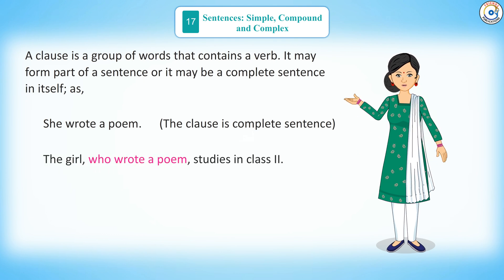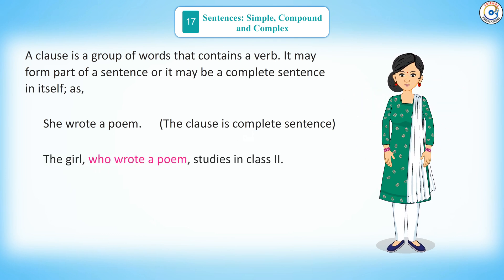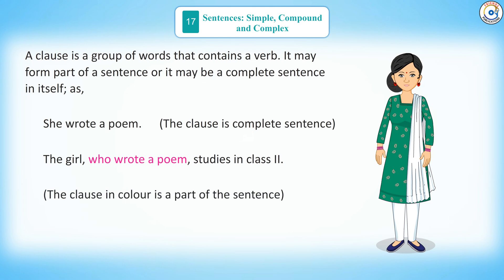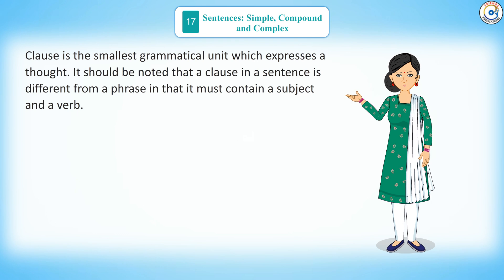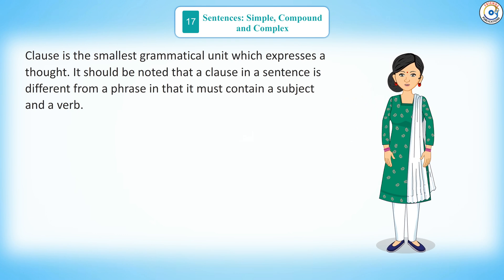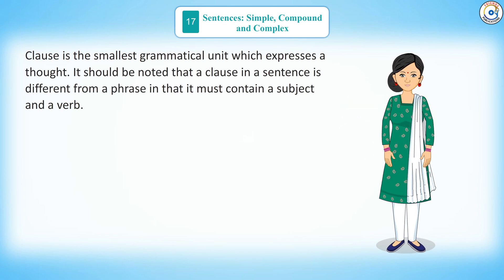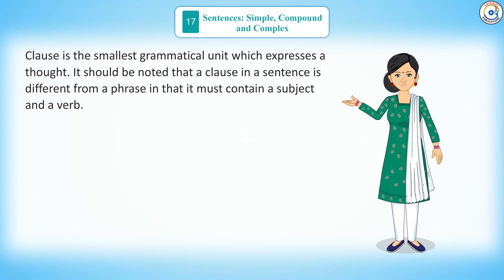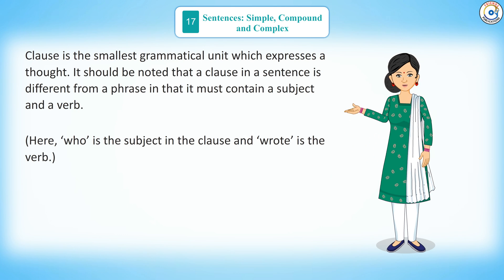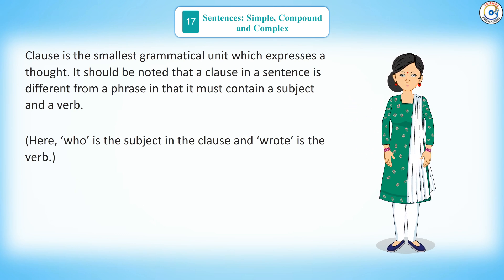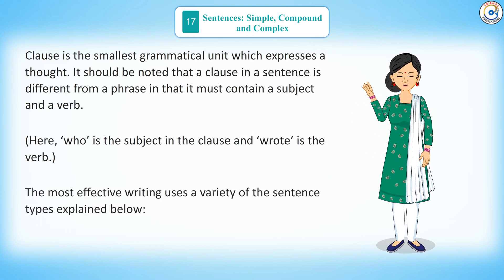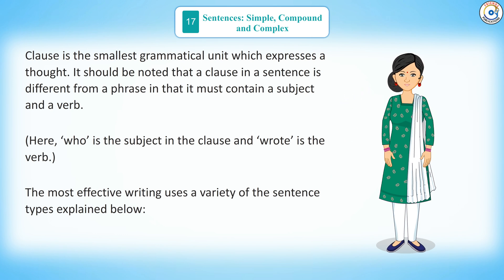'The girl who wrote a poem studies in class too.' The clause in colour is a part of the sentence. A clause is the smallest grammatical unit which expresses a thought. It should be noted that a clause in a sentence is different from a phrase in that it must contain a subject and a verb. Here, 'who' is the subject in the clause and 'wrote' is the verb.